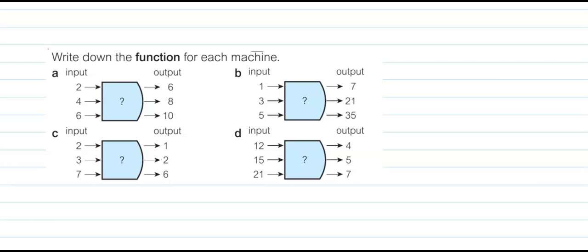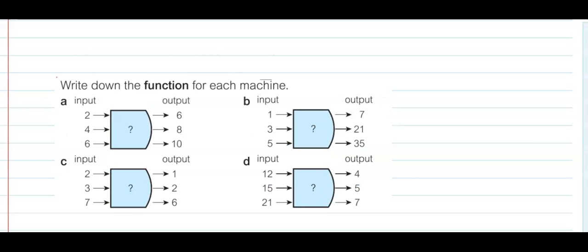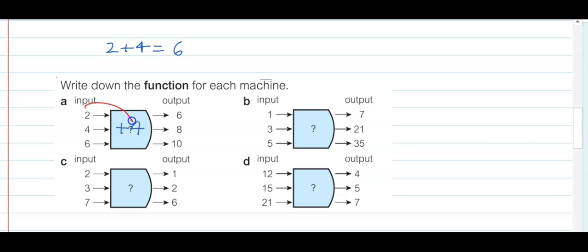For part A, the answer is plus 4. Let's check: 2 plus 4 gives 6 — that's right. 4 plus 4 is 8 — we're getting it. And 6 plus 4 is 10 — we're getting it. So here it should be plus 4. Just check: 2 plus 4 is 6, 4 plus 4 is 8, and 6 plus 4 is 10. That is fine.